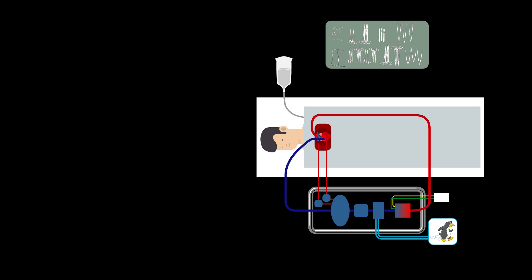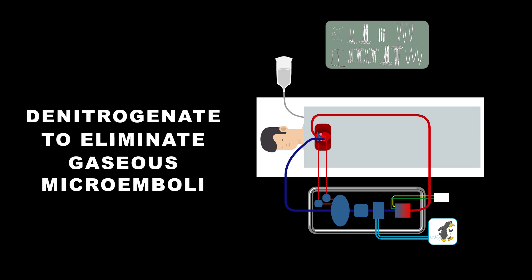Spectra Medical approaches cardiopulmonary support with the end goal of improving patient care. Every component plays an important role to achieve this goal, and we are going to provide an easy way to denitrogenate the blood to minimize and eliminate gaseous microemboli in the arterial line.